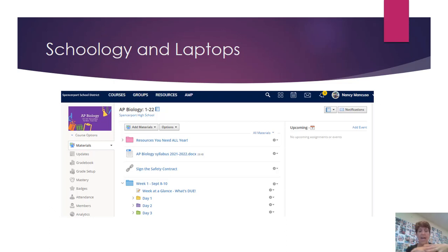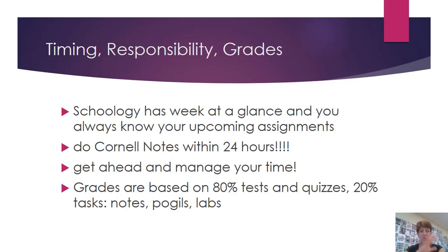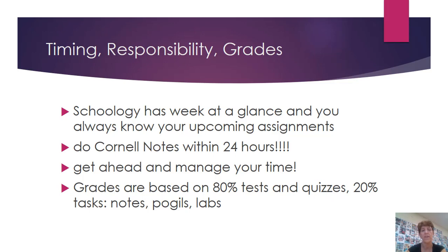You'll see the syllabus and the safety contract, and then you'll see a week at a time. Each week starts with a week at a glance, so for that week you know everything you'll be doing during class and outside of class so you can get ahead on your work. Cornell notes — I want those done within 24 hours. You can always get ahead and manage your time well. For grades, instead of 100% tests like in college, it's going to be 80% tests and 20% your other work that you're turning in.